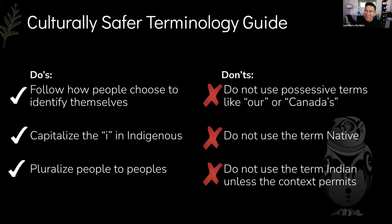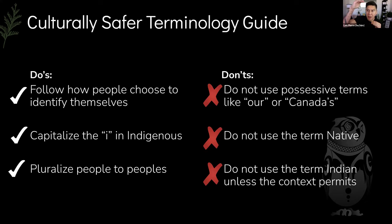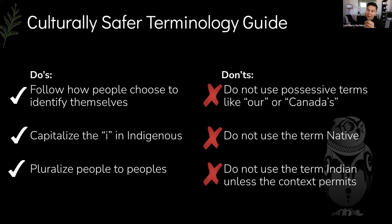Please avoid using possessive terminology in your writing or talking about Indigenous people. Possessive terminology looks like 'our Indigenous partners,' 'our Indigenous students,' 'our Indigenous communities.' When you use possessive terminology like 'ours,' you put the institution up here and Indigenous peoples down here. Cultural safety is all about addressing power imbalances inherent in our Western colonial systems. The same applies to Canada's: 'Canada's Indigenous people' — we do not belong to Canada. We are far older than the concept of Canada.